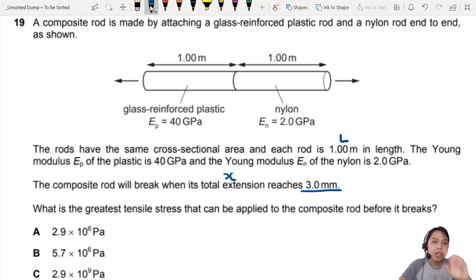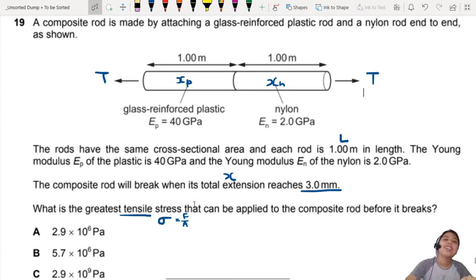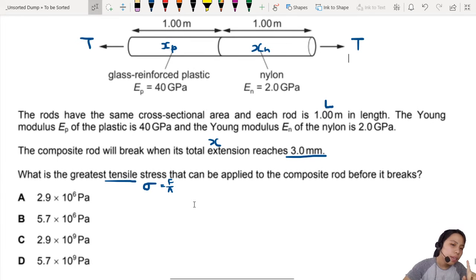What is the total extension? The plastic is going to expand a bit, nylon is also going to expand a bit by different rates. Which one is softer? It will stretch out more. So the plastic is going to have some extension, nylon is going to have extension, but the total thing will break if you reach 3mm. What is the greatest tensile stress? Stress is this one, we use this symbol sigma, which is usually force per unit area. Tensile means you are pulling it apart.